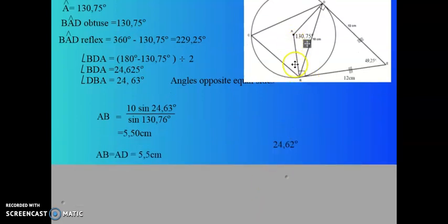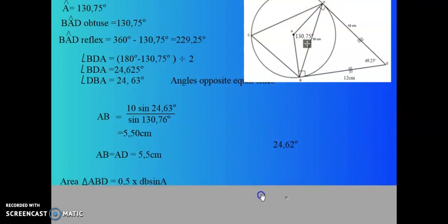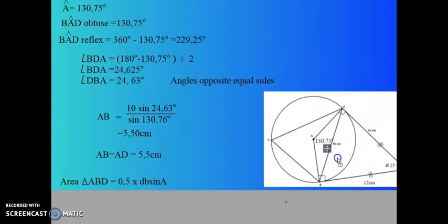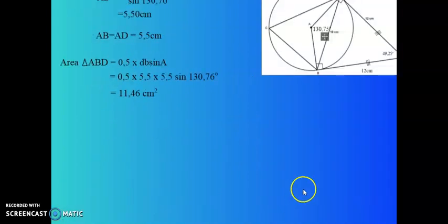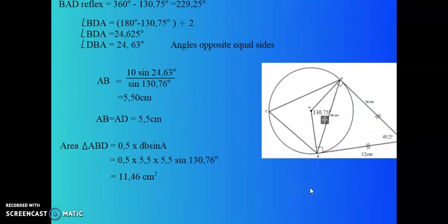So I know that AB is 5.5 as well as AD is 5.5 centimeters. So now I can use the area rule, which says the area of triangle ABD is equal to half of DB sine of A. So half of 5.5 multiplied by 5.5 multiplied by sine of 130.76 degrees. Gives me an answer of 11.46 square centimeters.